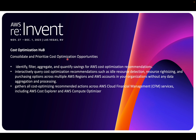Cost Optimization Hub identifies, filters, aggregates, and quantifies the savings of your AWS cost optimization recommendations. It will help you identify, filter, aggregate, and quantify your savings regarding cost optimization opportunities. This tool is very relevant on the AWS side, and if you're running a multi-account enterprise environment, Cost Optimization Hub gives you an opportunity to prioritize your cost optimization actions.